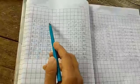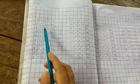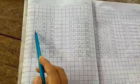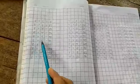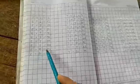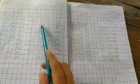6 1's are 6, 6 2's are 12, 6 3's are 18, 6 4's are 24, 6 5's are 30, 6 6's are 36, 6 7's are 42, 6 8's are 48, 6 9's are 54, 6 10's are 60.